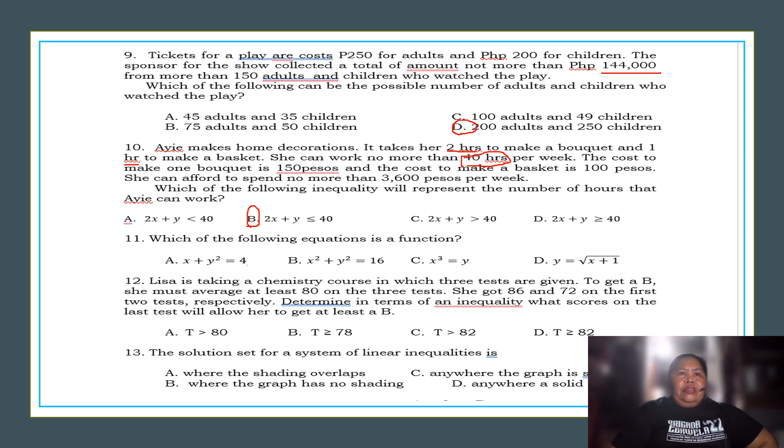Number 11. Which of the following equations is a function? Of course, from this given, the answer is function, letter B. Because X squared plus Y squared is equal to 16. All of this are, and we have here 16, and this is not a function. So, the correct answer is letter B.